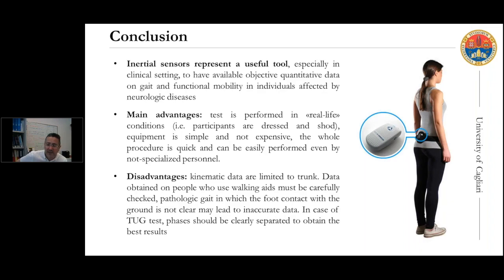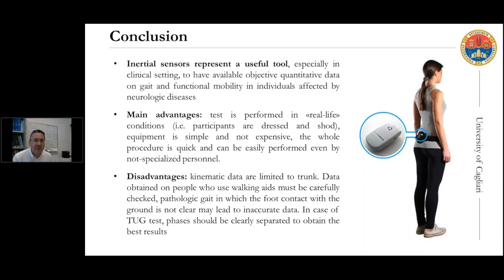Of course there are some limitations. The kinematic data are limited to the trunk, so the device is most useful for providing information about spatial-temporal parameters. Additionally, data obtained from people who use walking aids must be carefully checked, because one of the conditions for accurate data is the sensor's ability to correctly identify foot-ground contact. If this contact is not clear, data from the system report must be checked carefully. Similarly, in the case of the TUG, the phases should be clearly separated to obtain the best results. Thank you very much for your attention — if you have any questions, I'd be very glad to answer.